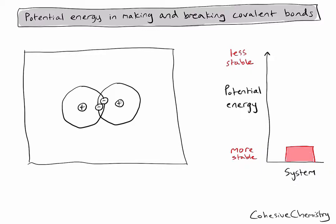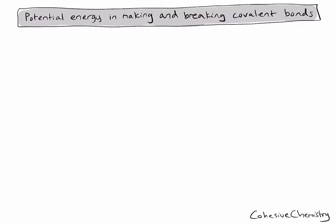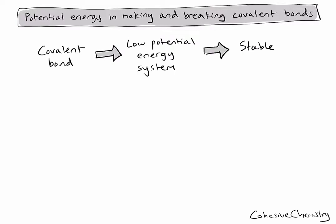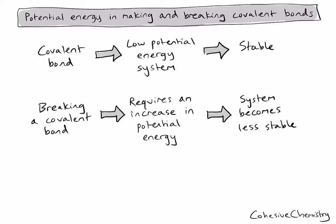Let's now consider the key points from this video. Firstly, a covalent bond is a system of low potential energy, meaning it is stable. In order to break a covalent bond, I require an increase in potential energy in my system, meaning the system is becoming less stable. And lastly, when making a covalent bond, we require a decrease in potential energy as my system is becoming more stable.